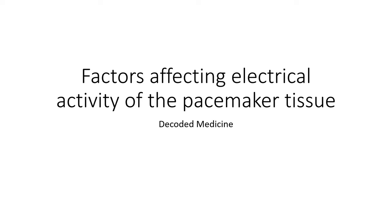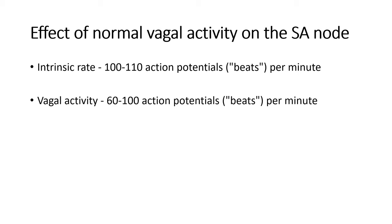Let's talk about the factors affecting the electrical activity of the pacemaker tissue of the heart. As the SA node is the primary pacemaker of the heart, the discussion will pertain mostly to the SA node. Left without any external innervation, the SA node is capable of generating 100 to 110 action potentials per minute, keeping the heart rate at 100 to 110 beats per minute. This is the intrinsic rate of the SA node without any external innervation.